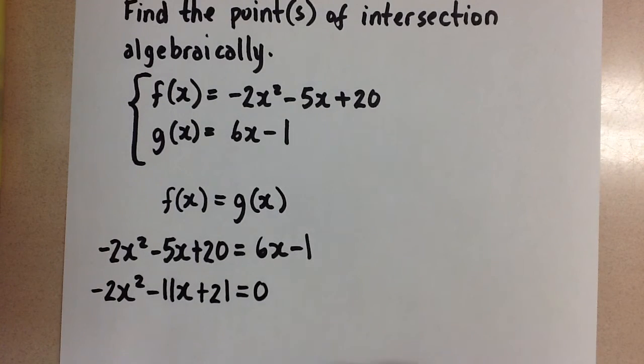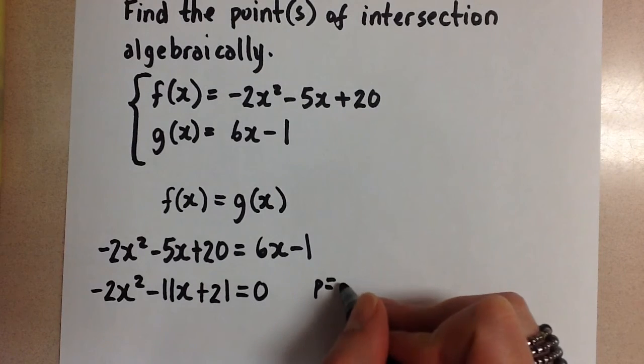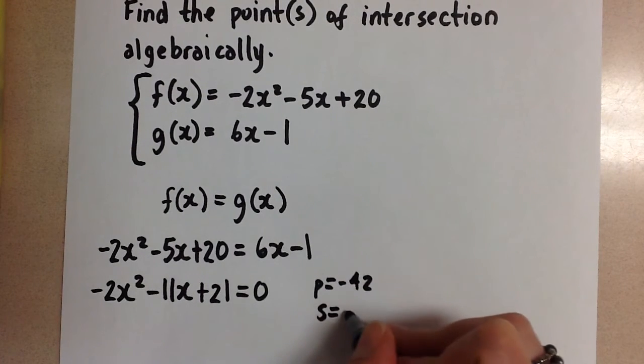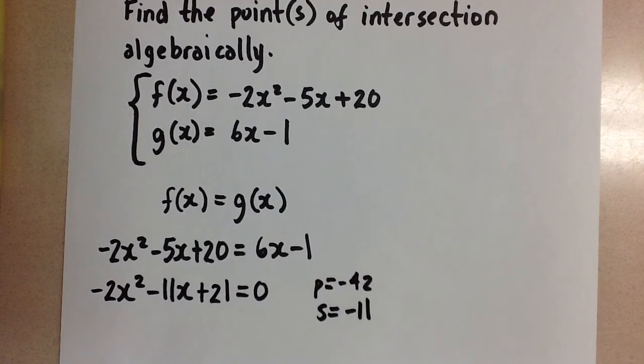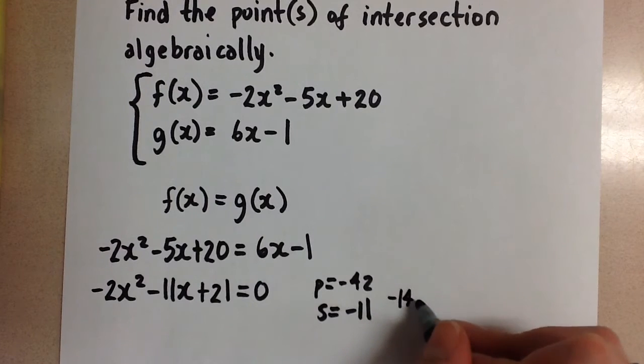So we're going to try to factor first here. The product is negative 42 and the sum is negative 11. We can factor this equation. The two numbers are going to be negative 14 and positive 3.